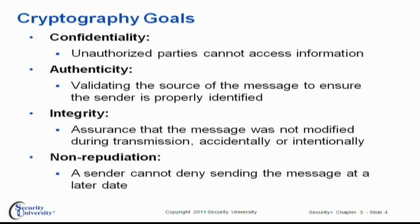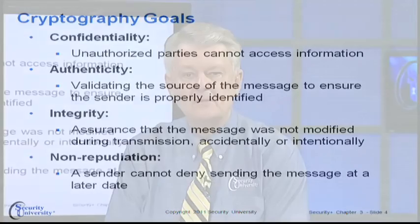So first of all, what are we trying to achieve with cryptography? What are our goals? One of those — the one that most people are familiar with — is to maintain confidentiality. We want to make sure that unauthorized parties cannot access information unless we want them to. Another key area is solidly verifying the authenticity of a message and who sent it. Another key area is to ensure that something hasn't changed. We talked about forensics — how to preserve evidence to prove to the judge and jury that the data had not been altered from the time it was gathered. So integrity is a very important goal of cryptography.